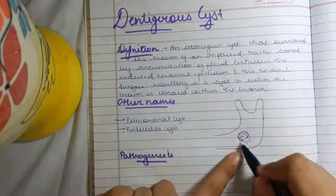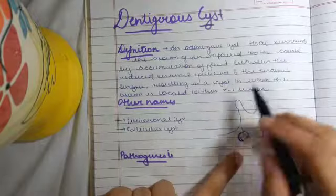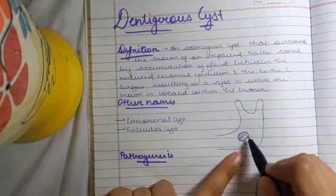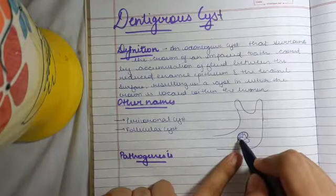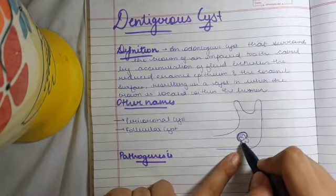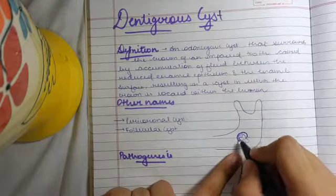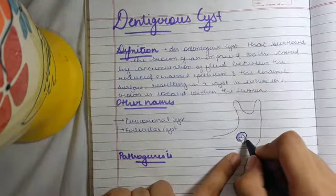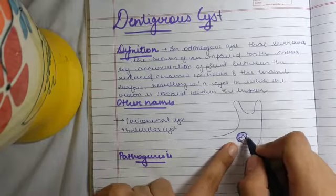In the definition, we talked about it being an odontogenic cyst that surrounds the crown of the impacted tooth, caused by fluid accumulation between the reduced enamel epithelium of the dental follicle and the enamel surface.